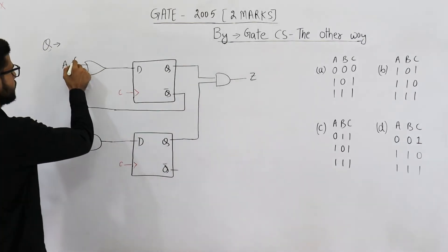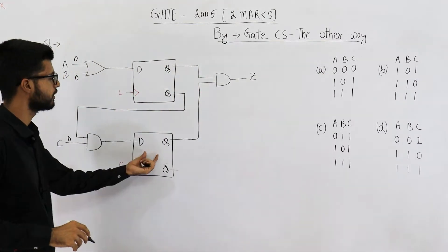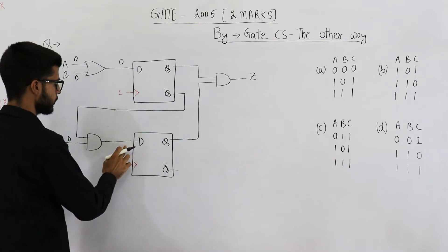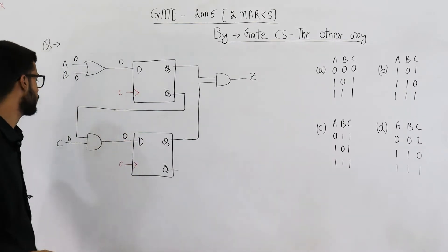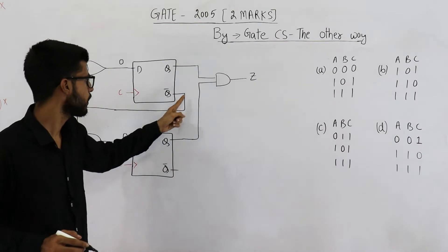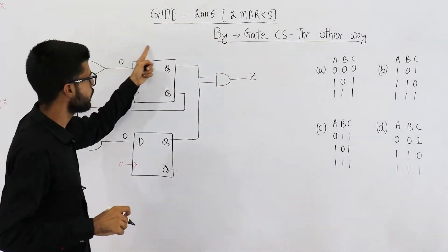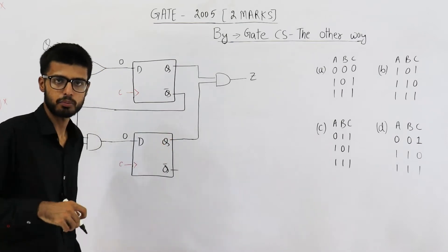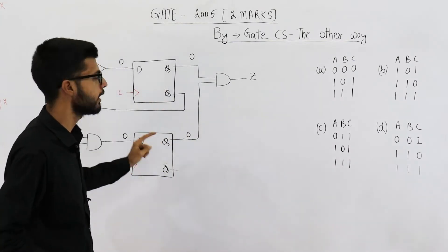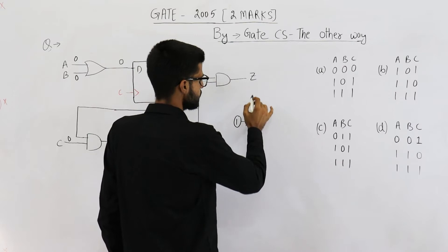Let us analyze option A. This is 0, this is 0, this is also 0 before giving the first clock. Now whenever we give a clock, these flip-flops will react. The input D will be 0 OR 0, which is 0. The input D will also be 0 for this flip-flop, because if at least one input of an AND gate is 0, the output is 0. So both outputs Q are 0, 0, meaning the AND gate will also output 0. So at the end of the first clock cycle, Z is 0.